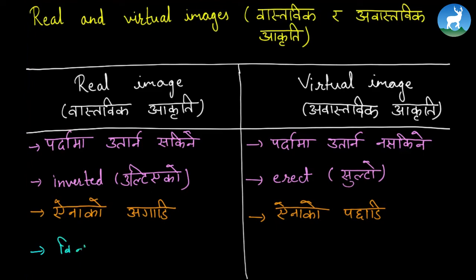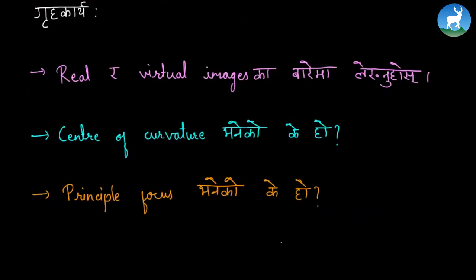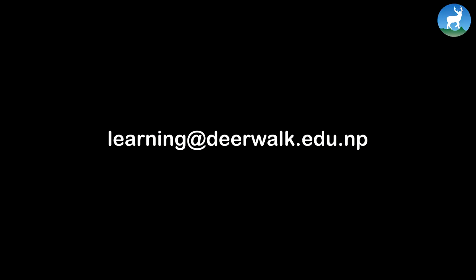A virtual image forms behind the mirror when reflected rays appear to diverge from a point. This concludes today's class. Write about real and virtual images as homework.